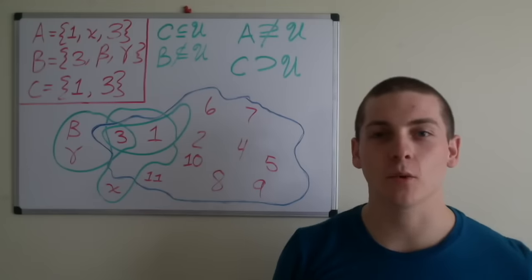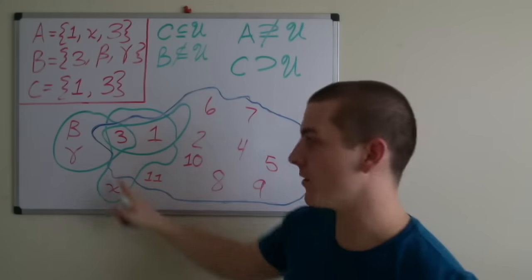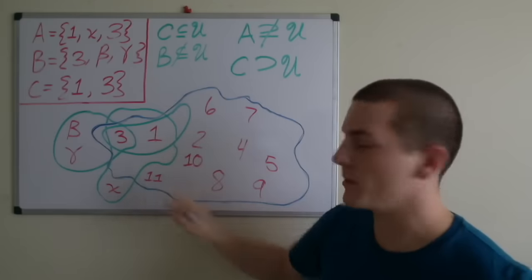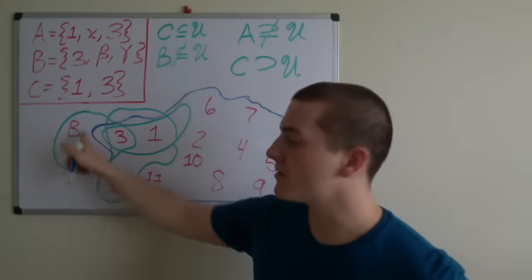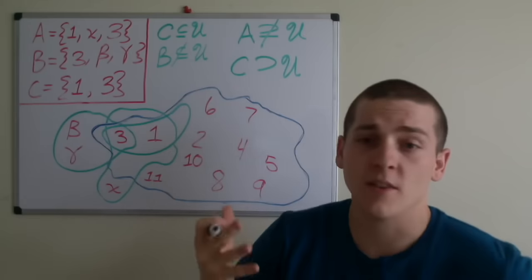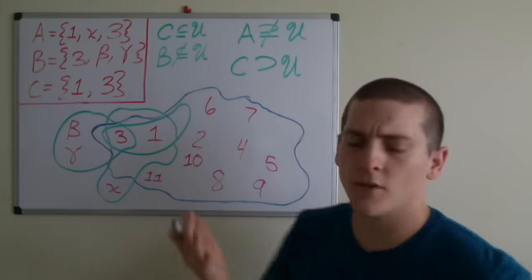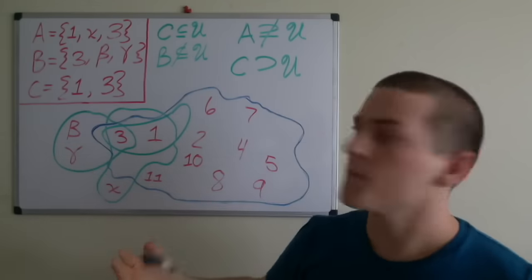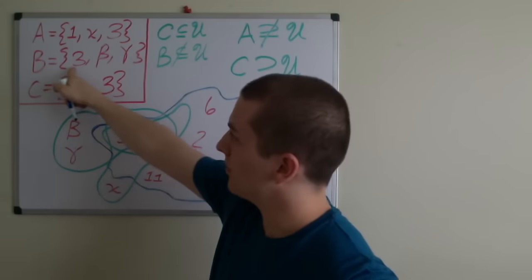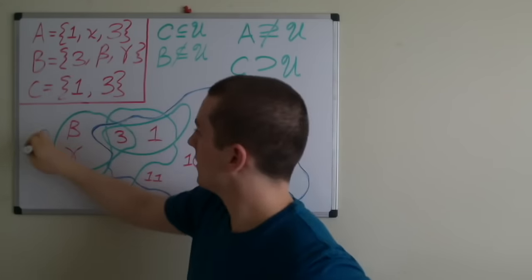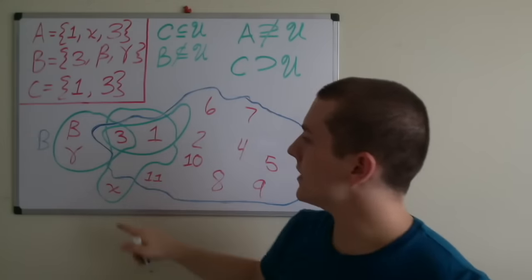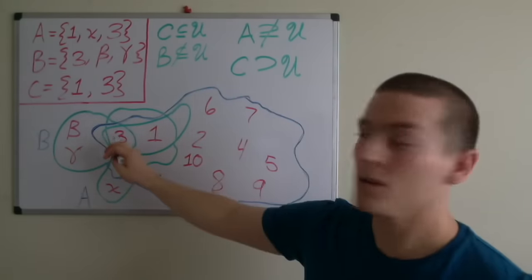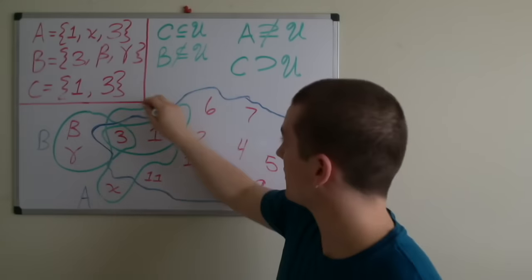In this video, I'll be giving examples for subsets and supersets. If you look at this blue line here, this represents our universal set — we've defined it to be the integers from 1 to 11. The green line contains elements 3, beta, and gamma, so that would be the set B. This set contains elements 3, 1, and x, so this is the set A. And finally, this set contains elements 1 and 3, so this is the set C.